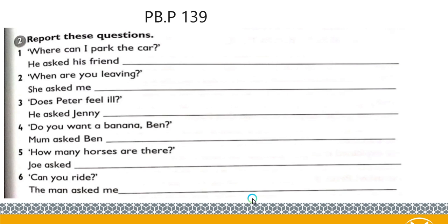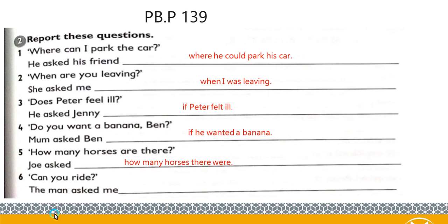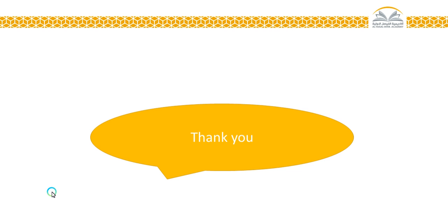Page 139 — report these questions. 'Where can I park the car?' He asked his friends where he could park his car. 'When are you leaving?' She asked me when I was leaving. 'Does Peter feel ill?' He asked Jenny if Peter felt ill. 'Do you want a banana, Ben?' Mom asked Ben if he wanted a banana. 'How many horses are there?' John asked how many horses there were. 'Can you write?' The man asked me if I could write. Hope you enjoyed our lesson!